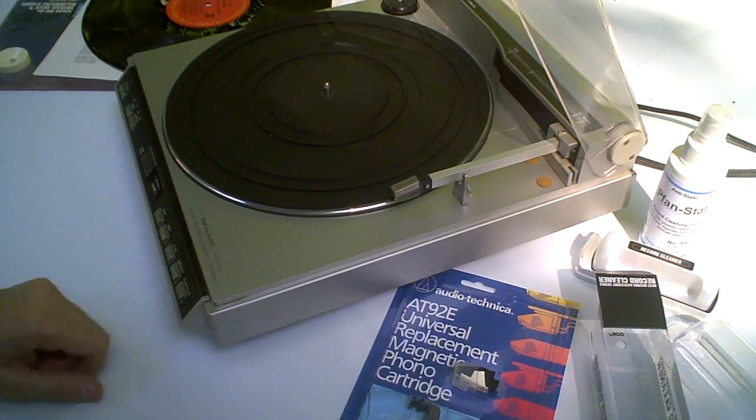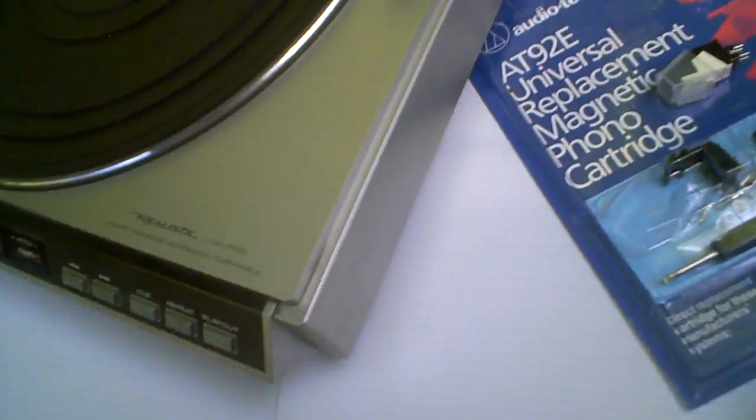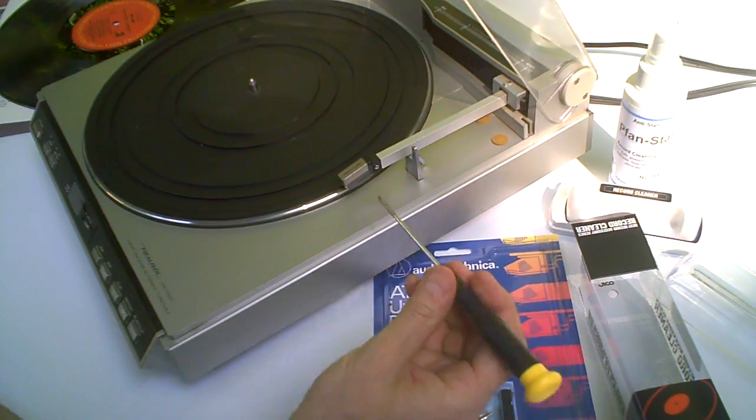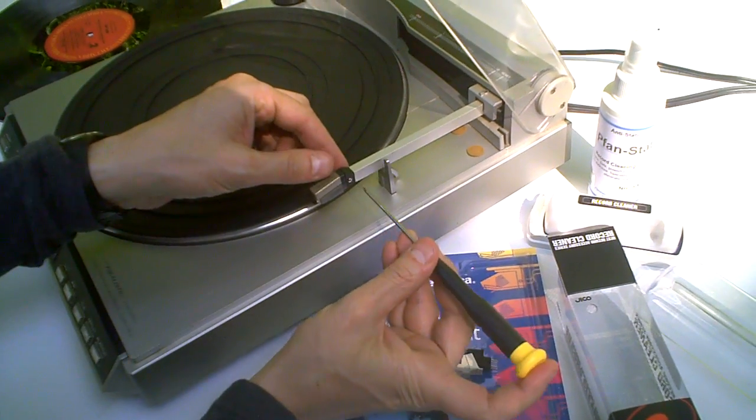Hi, welcome to the turntableneedles.com Realistic Lab 2000 quick fix video. This is an old linear tracking turntable from the 80s. Tips the scales at 13 and a half pounds.